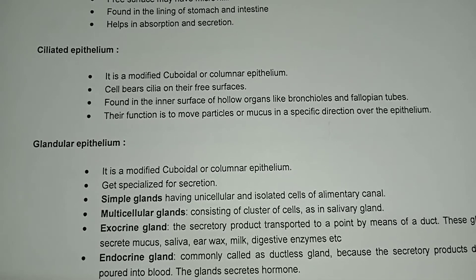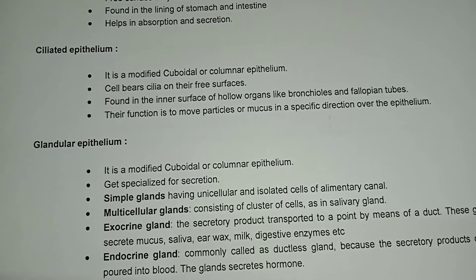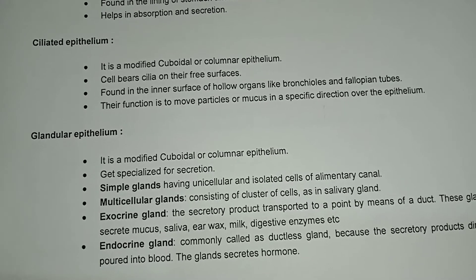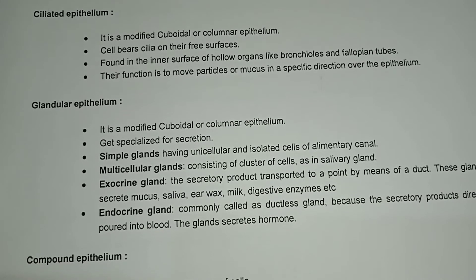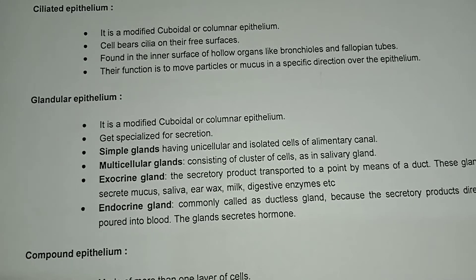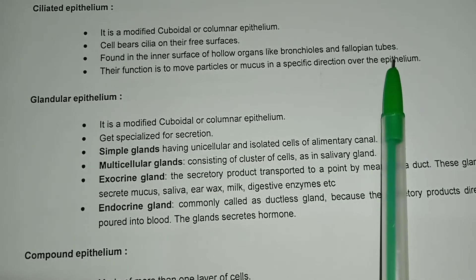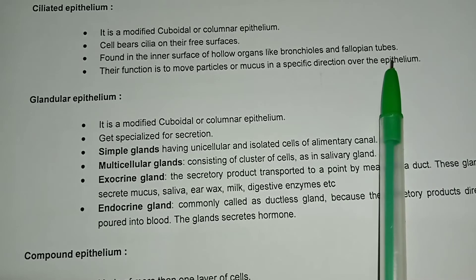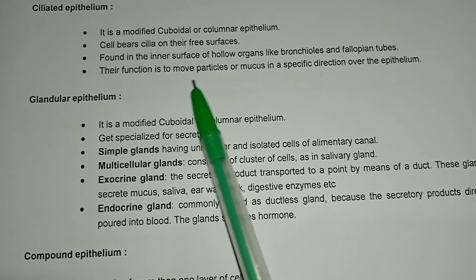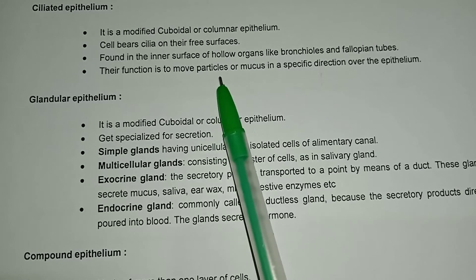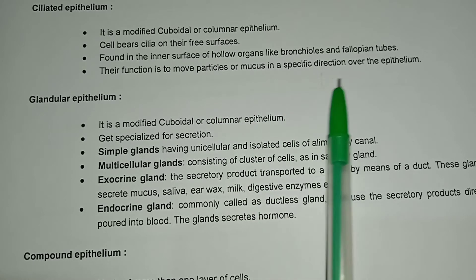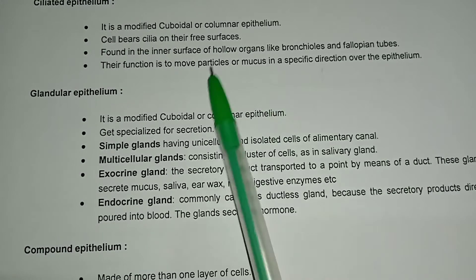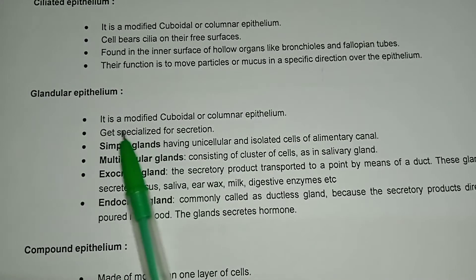Ciliated epithelium is a modified cuboidal or columnar epithelium where cells bear cilia on their free surface. It is found on the inner surface of hollow organs like bronchioles and fallopian tubes.